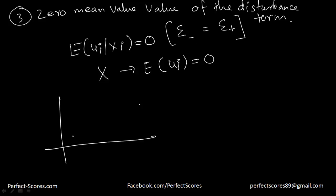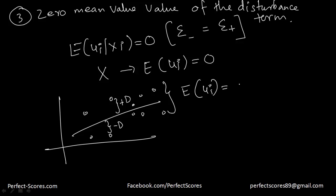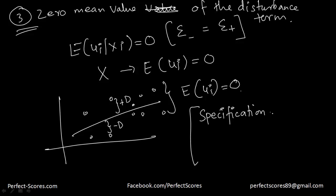So if there is an error term giving a positive deviation, there has to be an error term somewhere giving a negative deviation. The expected value of the error term is always going to be equal to zero. If this assumption is not met, there is a specification error in our linear function. We'll discuss specification error more in later videos — for now, we just need to understand the assumptions that underlie our method of least squares.